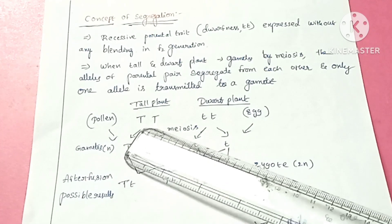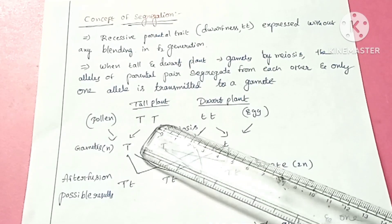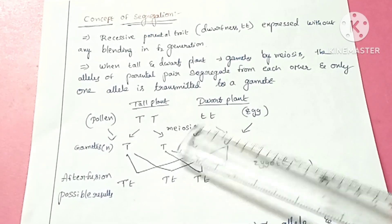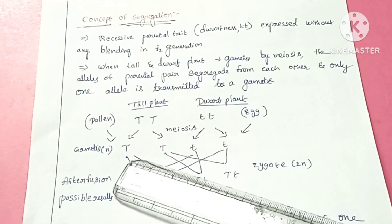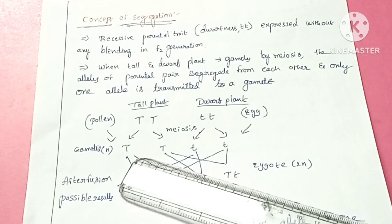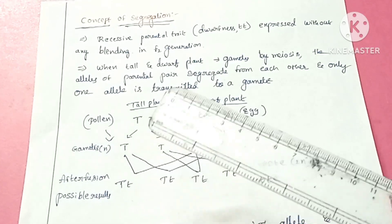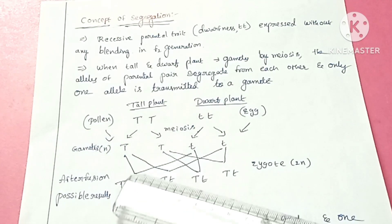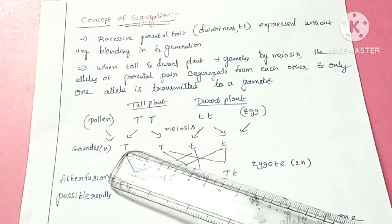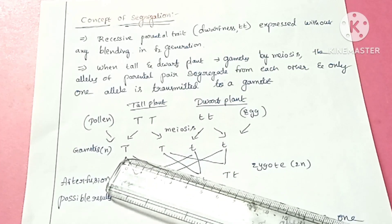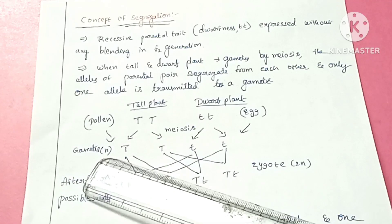The parental trait has alleles. Tall plants have capital T and dwarf plants have small d. The alleles separate — this is called segregation, also called separation. These alleles segregate from each other, and only one allele is transmitted to the gamete.